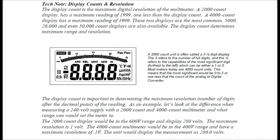Display counts and resolution: the display count is the maximum digital resolution of the multimeter. A 2000-count display has a maximum reading of 1999, and a 4000-count display has a maximum reading of 3999. These two are the most common displays, however on the market today there are also 5000, 20,000, and even 50,000-count displays available. The display count determines the maximum range and resolution.